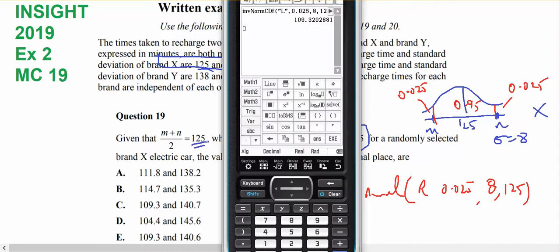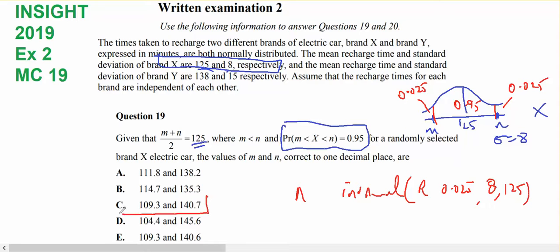So I can find n using inverse normal with 0.025, standard deviation of 8, mean of 125. On the calculator, that's the left and if I was to do the right, I'm looking at 109 and 140. It's 140.7 and 109.3, so C is going to be my answer.